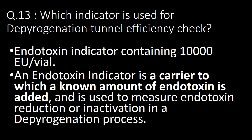The next very frequently asked question: which indicator is used for depyrogenation tunnel efficiency check? An endotoxin indicator containing 10,000 EU per wire is used for depyrogenation tunnel efficiency check. An endotoxin indicator is a carrier to which a known amount of endotoxin is added and is used to measure endotoxin reduction or inactivation in a depyrogenation process.